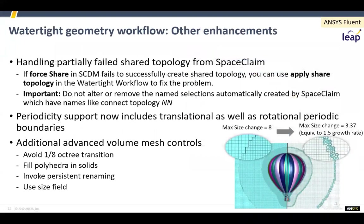There have been other enhancements. When you create shared topology in SpaceClaim and it's a very complex model that partially fails, you can now bring those files into Fluent Meshing into the watertight workflow and finish the job off there. You've now got the option to generate periodic boundary conditions that are translational as well as rotational. And there were some significant improvements in the way you can join up meshes, particularly when using the hex core.